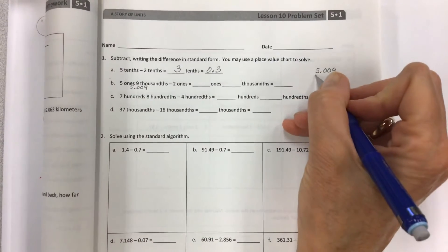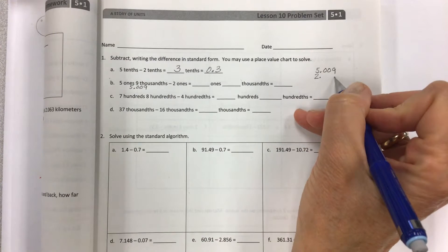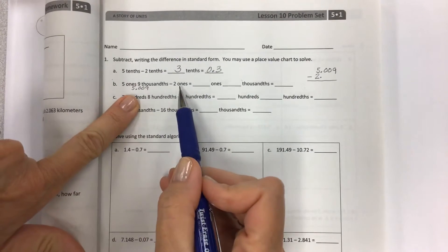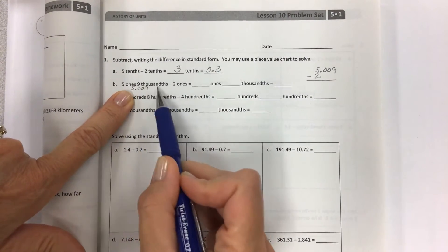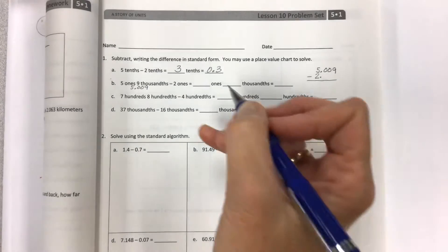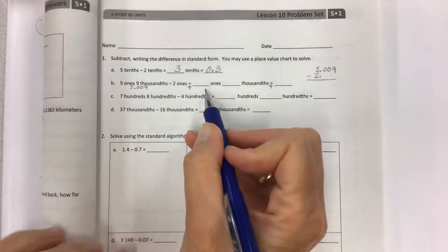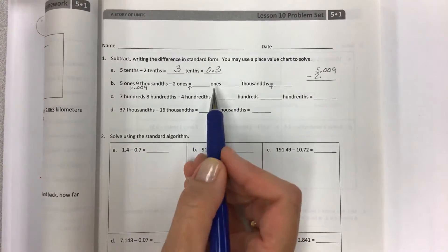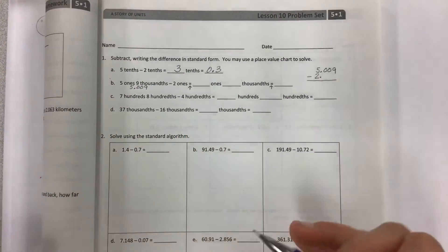Minus 2 ones, look at that. Now this is what throws people off because they'll be like, oh, I'm going to put the 2 over here. No, this is thousandths. Only subtract from the column that they're telling you. 2 ones, 5 ones. Take the 2 ones from the 5 ones. Do not touch the 9 thousandths. Watching out for those equals because that could throw you off.